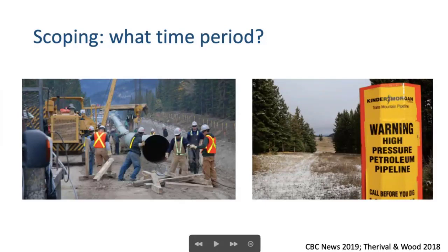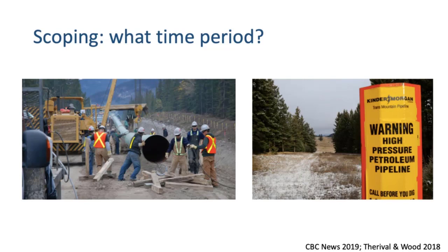Another key scoping question is: what time period are we looking at? This is really important. If we're looking at employment, there are substantial differences in impacts and benefits during construction versus operation. A pipeline is a good example — there may be many jobs during construction, but far fewer during operation. Best practices say social impacts should be considered for all stages of development, from construction right through to closure. But doing that in practice involves considerable uncertainty, as employment numbers are always projected.